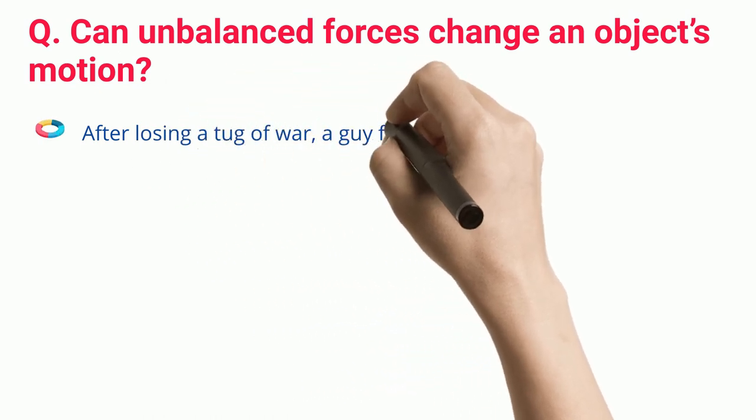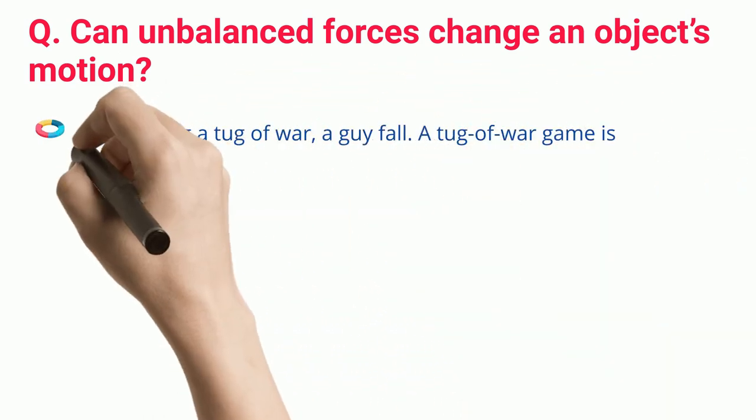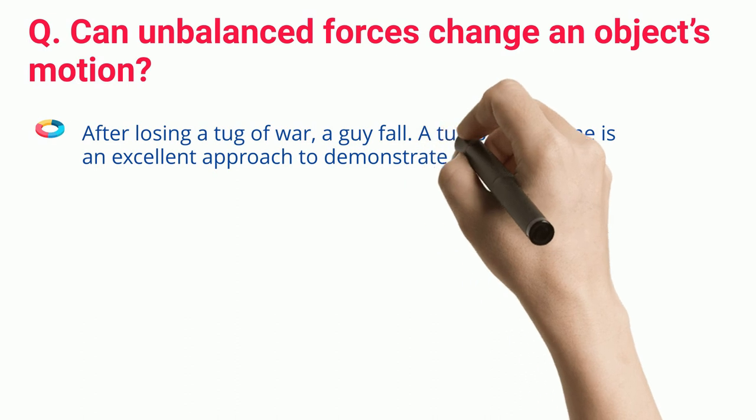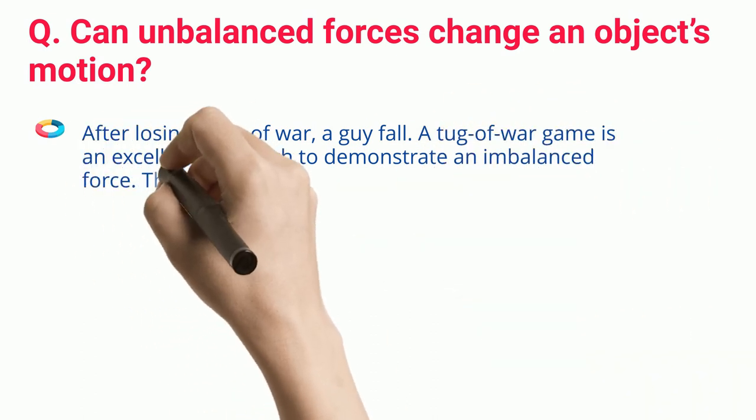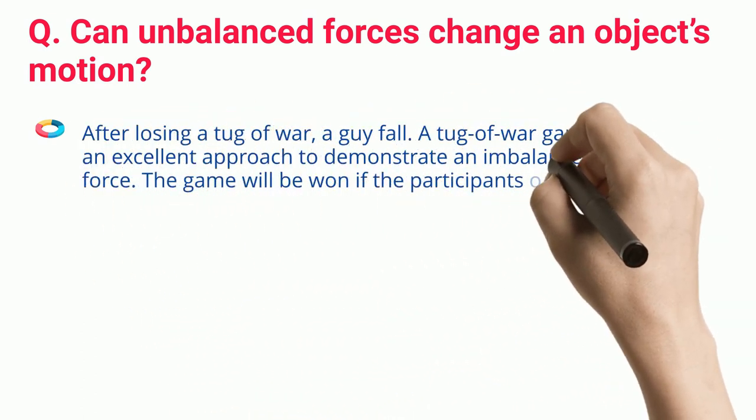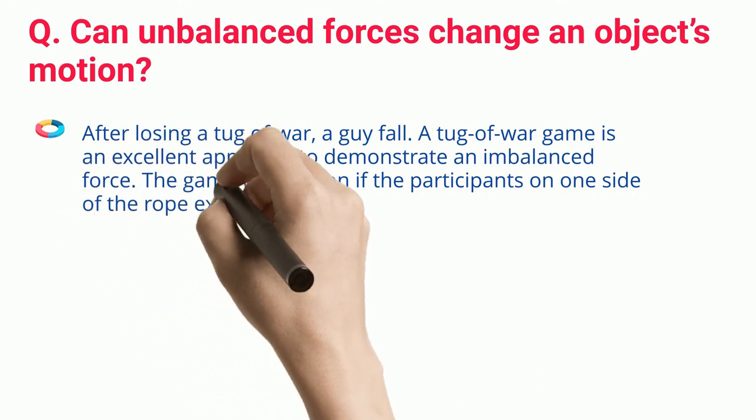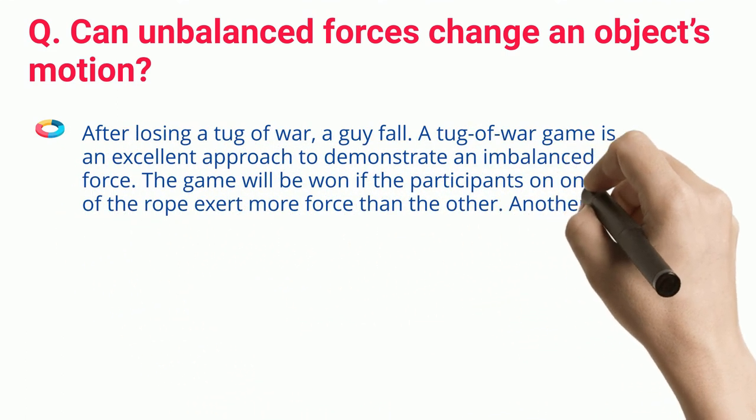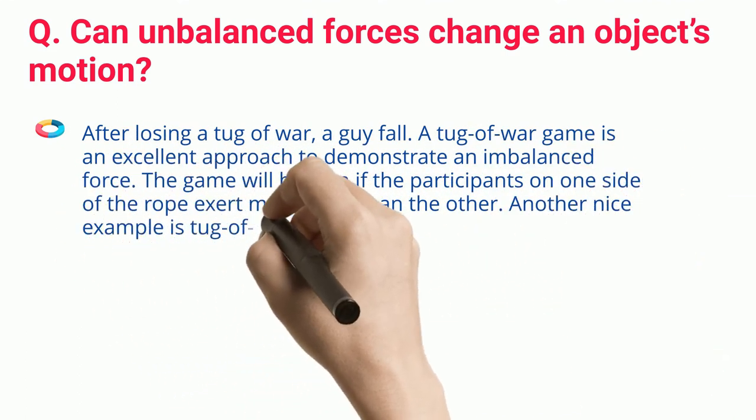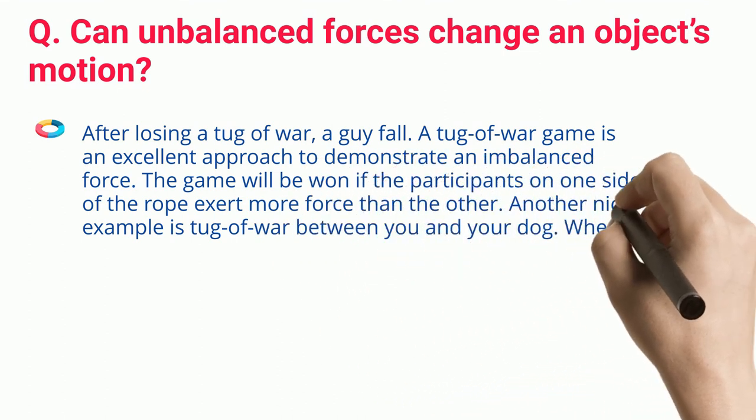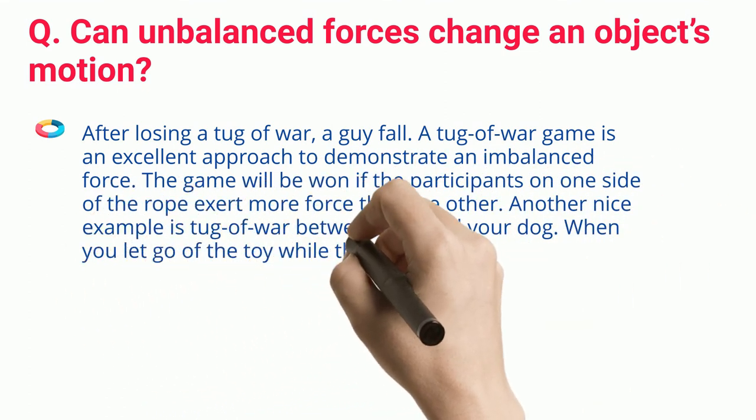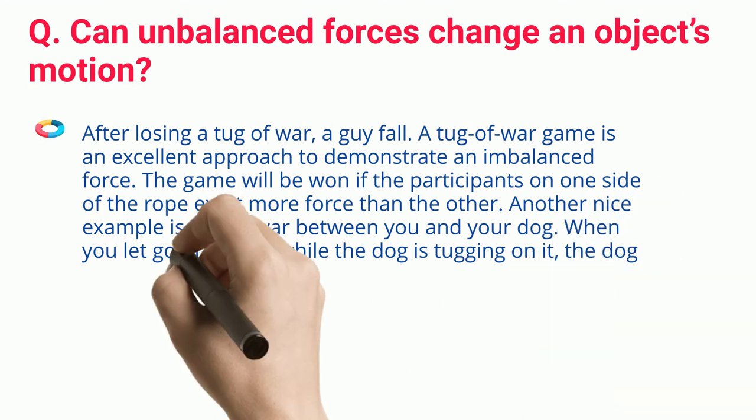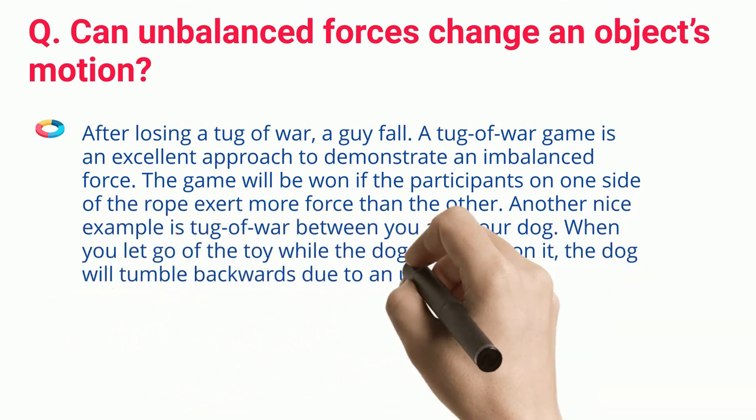After losing a tug-of-war, a guy falls. A tug-of-war game is an excellent approach to demonstrate an imbalanced force. The game will be won if the participants on one side of the rope exert more force than the other. Another nice example is tug-of-war between you and your dog. When you let go of the toy while the dog is tugging on it, the dog will tumble backwards due to an uneven force.